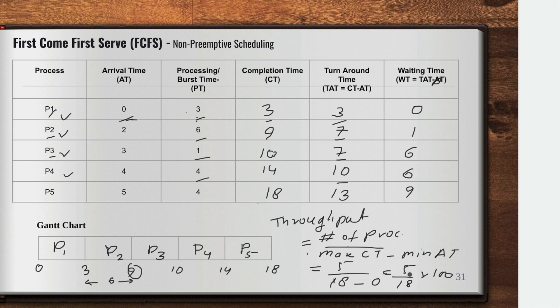So that's your first come first serve scheduling algorithm, which states that the process that comes first in the ready queue will be served first, irrespective of its processing time. When asked to calculate average completion time, average turnaround time, and average waiting time, first create the Gantt chart and then calculate all these values from it. I'll see you in the next video. Thank you very much, bye bye.